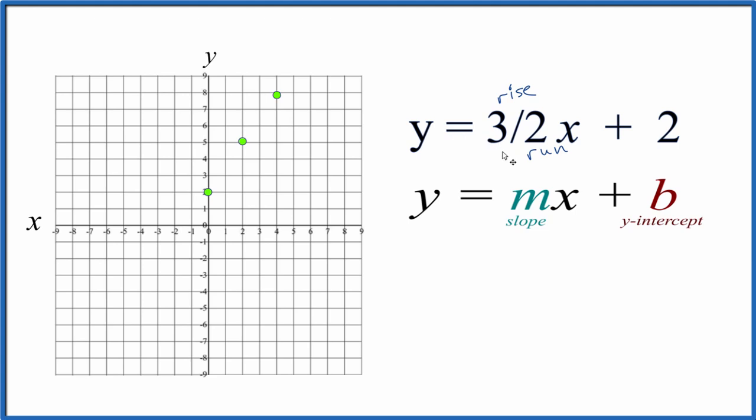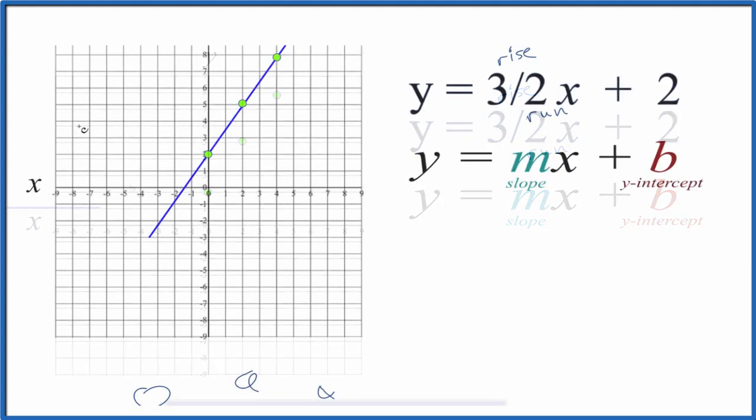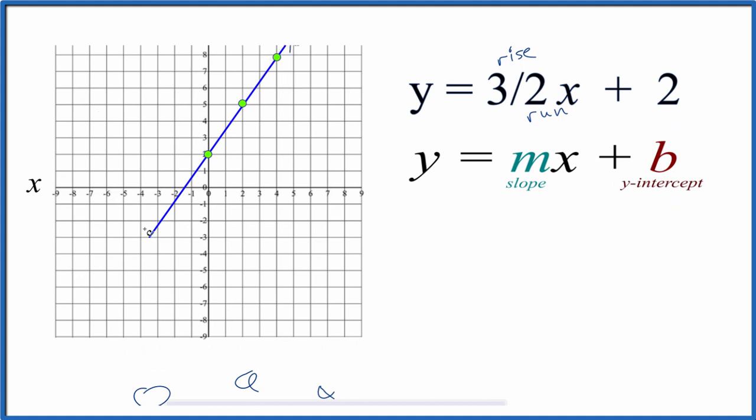That's our line for y equals 3 halves x plus 2. Let's put a line through that. Then we can put arrows, show that this goes to infinity. That's the graph for y equals 3 halves x plus 2.